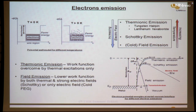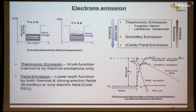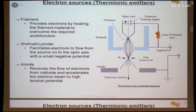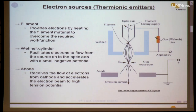In thermionic emission, the work function is overcome by thermal excitation alone. Field emission lowers the work function by using a strong electric field, or both thermal and electric field as in the Schottky hybrid version, or applying only an electric field as in cold field emission. For understanding thermionic emitters, a schematic with three important parts is used: the filament, Wehnelt cylinder, and anode. The filament generates and heats to produce electrons. The Wehnelt cylinder is a small negative electrostatic lens used for focusing the electrons. The anode receives and accelerates electrons to the required voltage such as 200 or 300 kV.